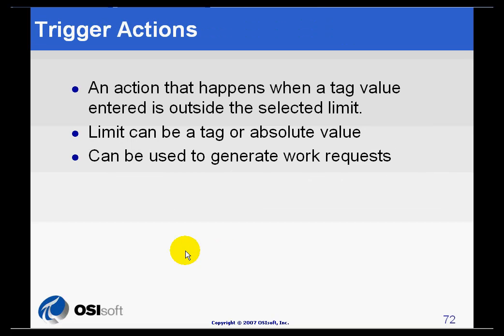In the last example, we also saw Trigger Actions, which happen when a tag value is entered and it is outside a selected limit. Those limits can be an absolute number, as we used in our example, or can also be other tags.